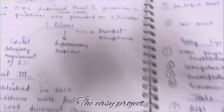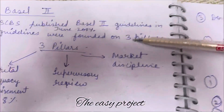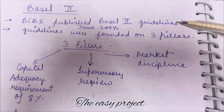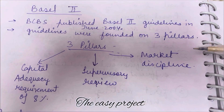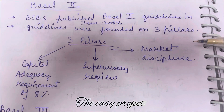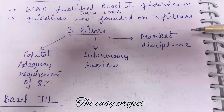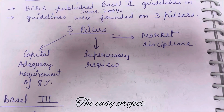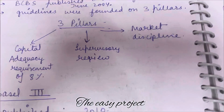Basel 2 was very easy. BCBA launched Basel 2 guidelines in June 2004, and it was set up on three main pillars: first, capital adequacy — the 8% requirement is complete; second, supervisory review; and third, market discipline.